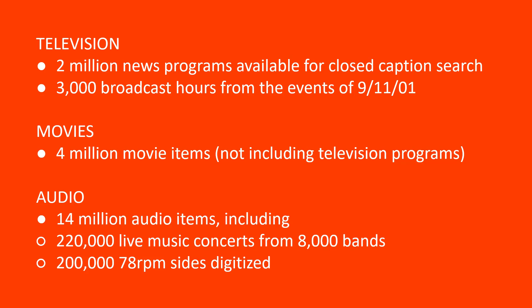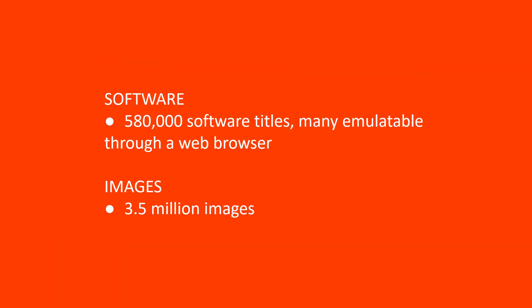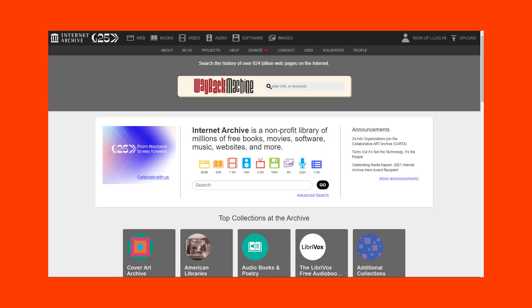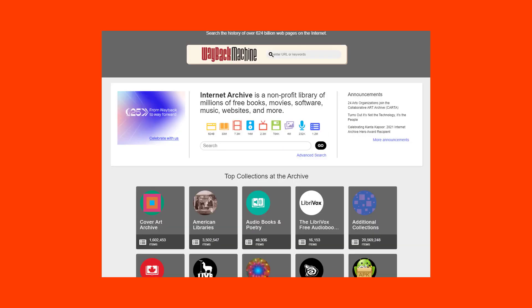There are 200,078 RPM sides digitized. Under software, there are 580,000 software titles, many emulatable through a web browser. And there are about 3.5 million images.